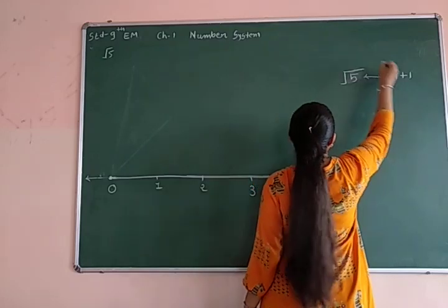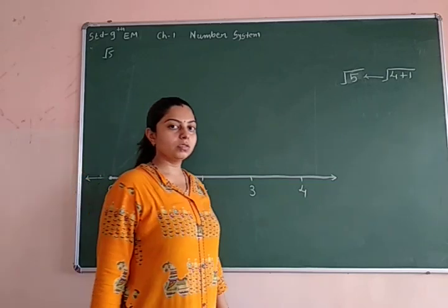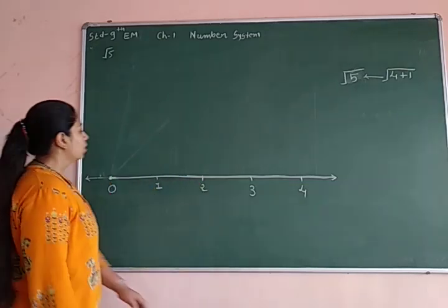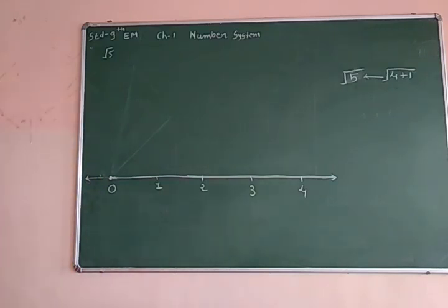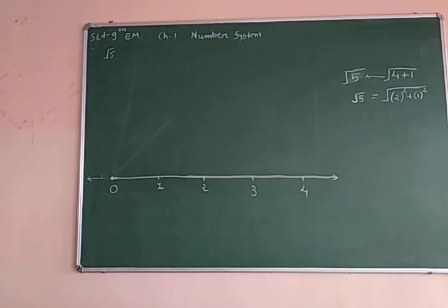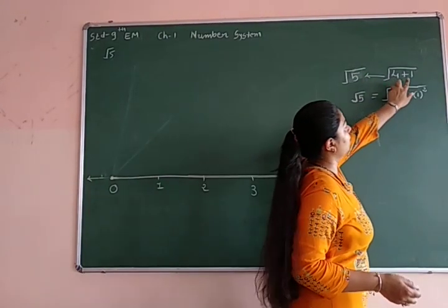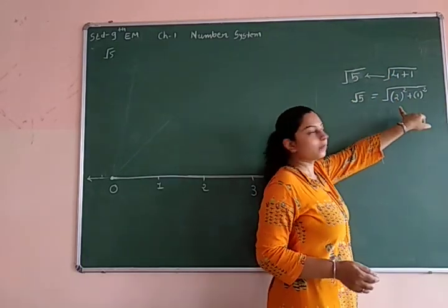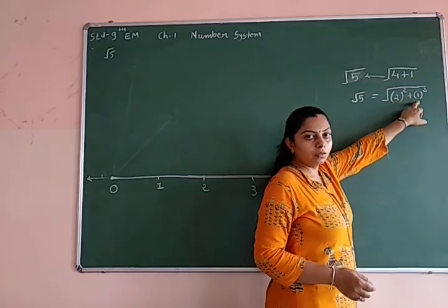So under root 5 is what? Under root 4 plus 1. Get it or not? Okay. So let me start now. See here. Root 5 is under root 4 plus 1. Now 4 is what? 2 is square. Square of 2. And 1 is what? Square of 1. Clear?